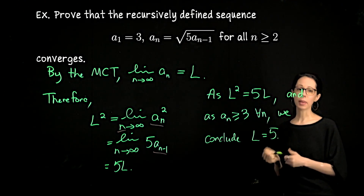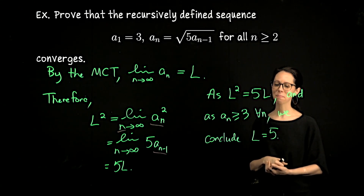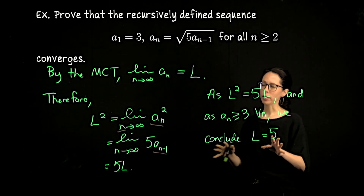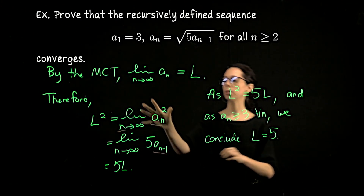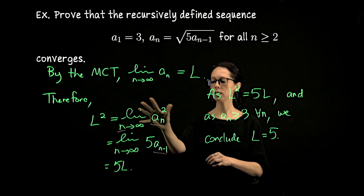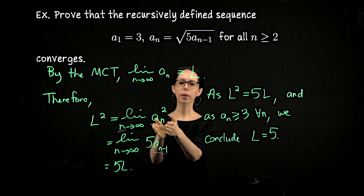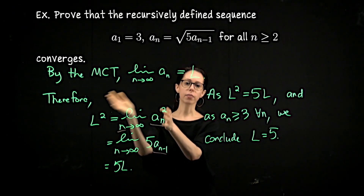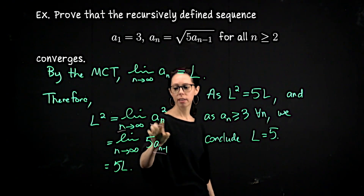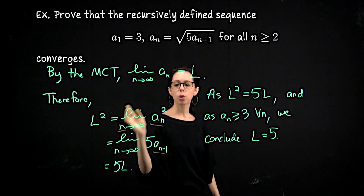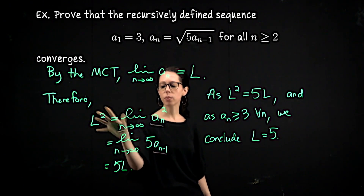The limit of this recursively defined sequence is 5, and if you compute a few terms numerically you'll agree. You might wonder why we needed the monotone convergence theorem rather than jumping straight to this algebra. The reason is you cannot do algebra on limits if any of the sequences diverge. Being able to say that if a sequence converges to L then the sequence squared converges to L squared is only valid if the sequence converges. So we must use the monotone convergence theorem first to establish convergence, and only then can we do this algebra.